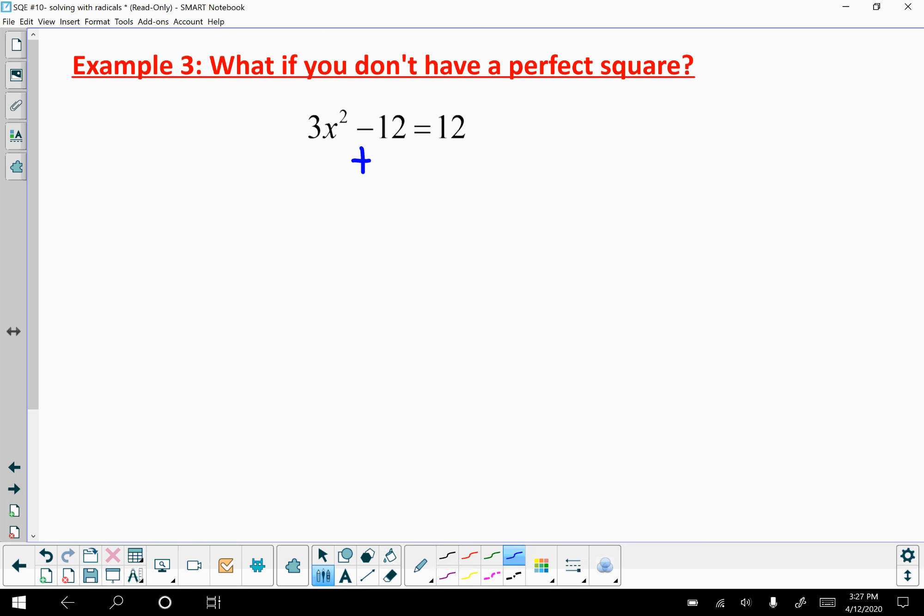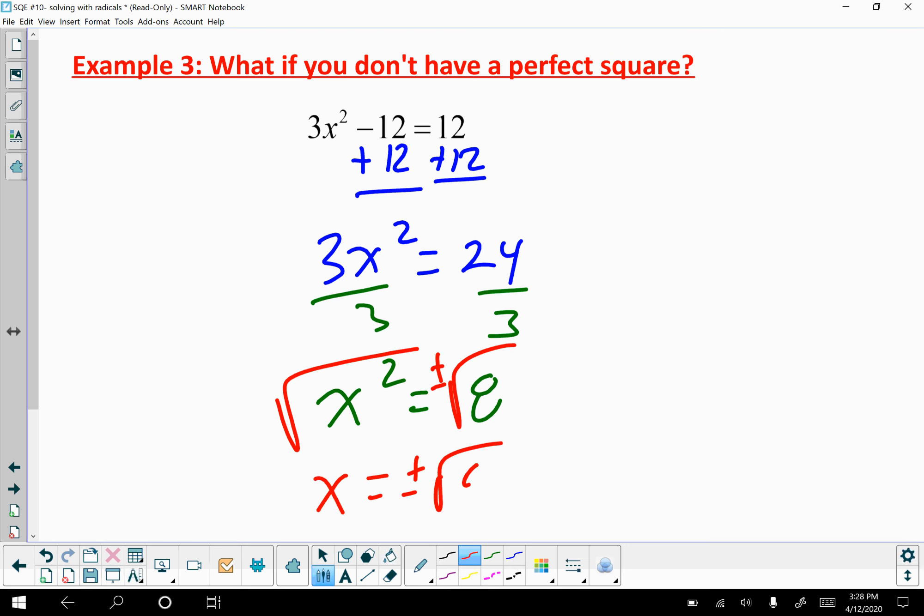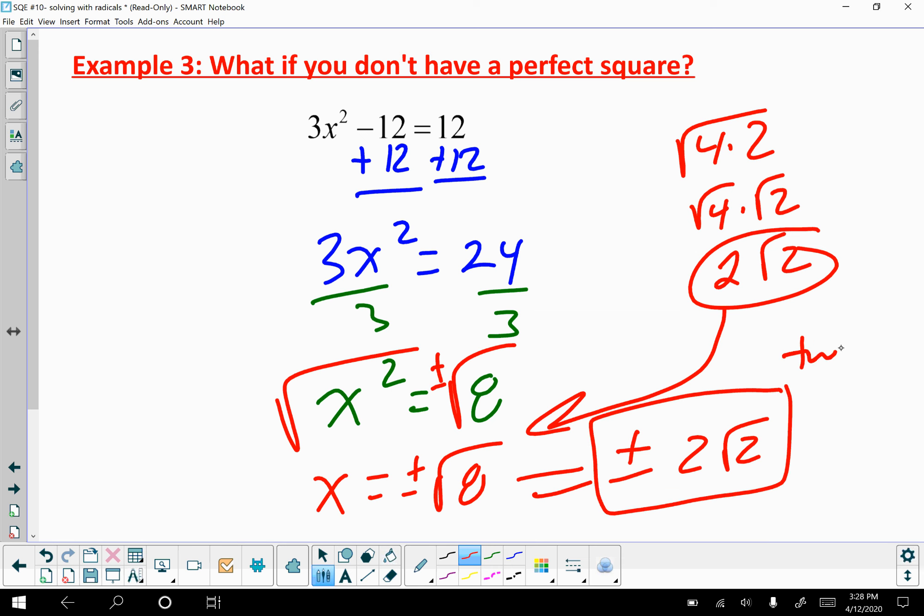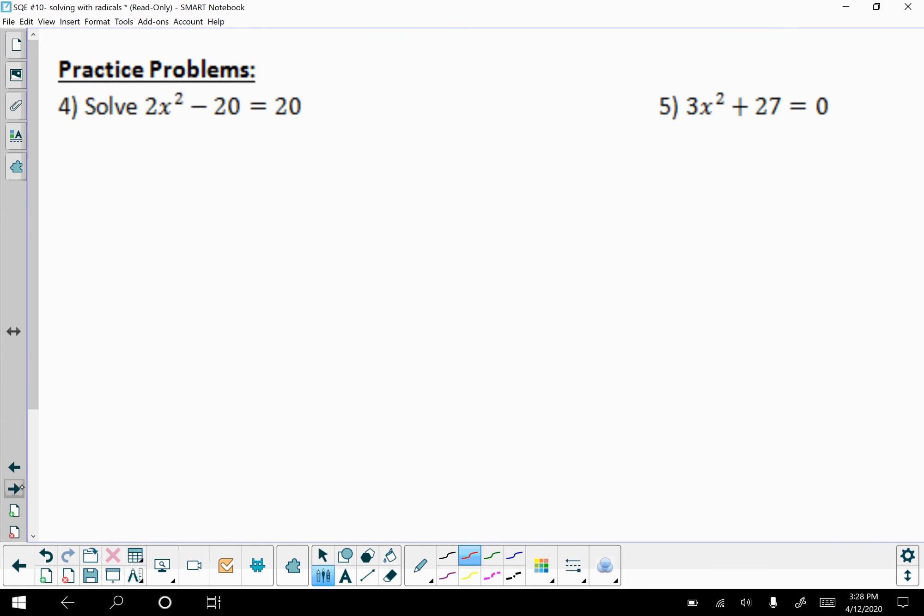All right, so what about we don't have a perfect square, so let's go add 12, add 12. So I get 3x² = 24. Divide by 3, divide by 3. So now I'm ready to take the square root. Don't forget the plus minus. But then you have to break down √8. Square root 8 breaks down to 4 times 2, which is √4 times √2. So that gives me 2√2. So I'm going to replace that down here. So my answer to this actually comes out to plus or minus 2√2. Again, there's two answers.